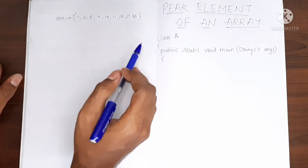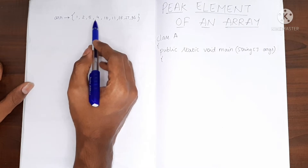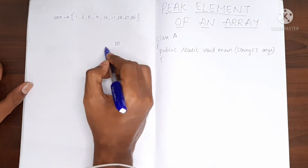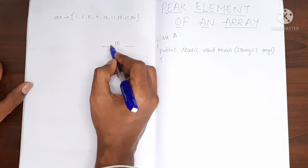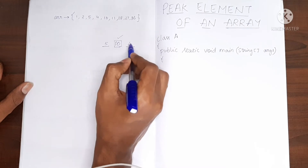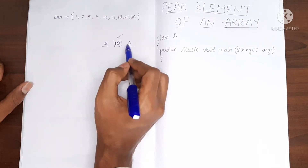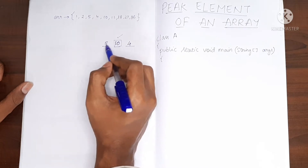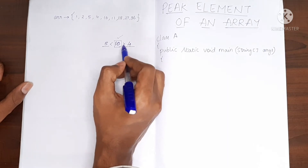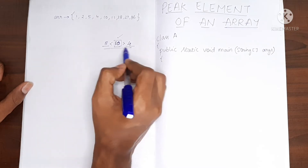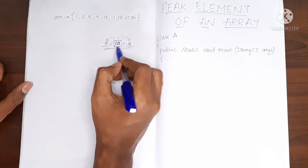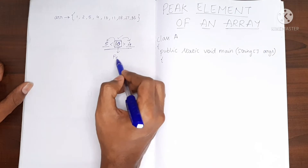So what is the peak element? Any element in an array is called a peak element if both its neighbors — the left and the right neighbor — are smaller than that element. For example, if we have an element 10 with 5 as the left neighbor and 4 as the right neighbor, we can see that 5 is smaller than 10 and 10 is greater than 4. In that case, 10 is a peak element. Both neighbors should be smaller than the element for it to be called a peak element.